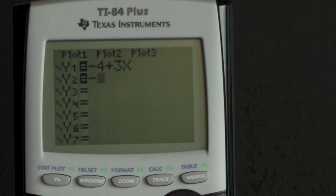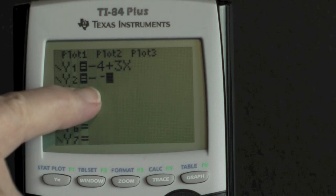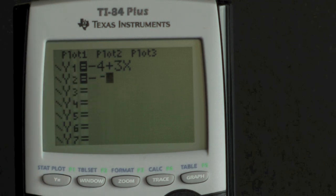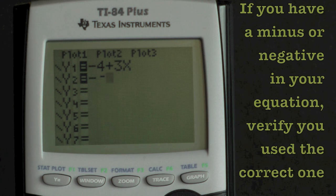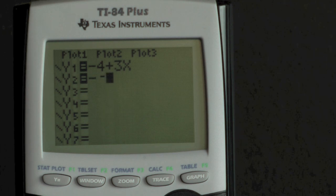The minus key makes a longer line than the negative key. After experimenting with both keys for a minute, you will be able to distinguish the difference on sight. If your equation has a minus or a negative in it, look to see if you use the correct one.